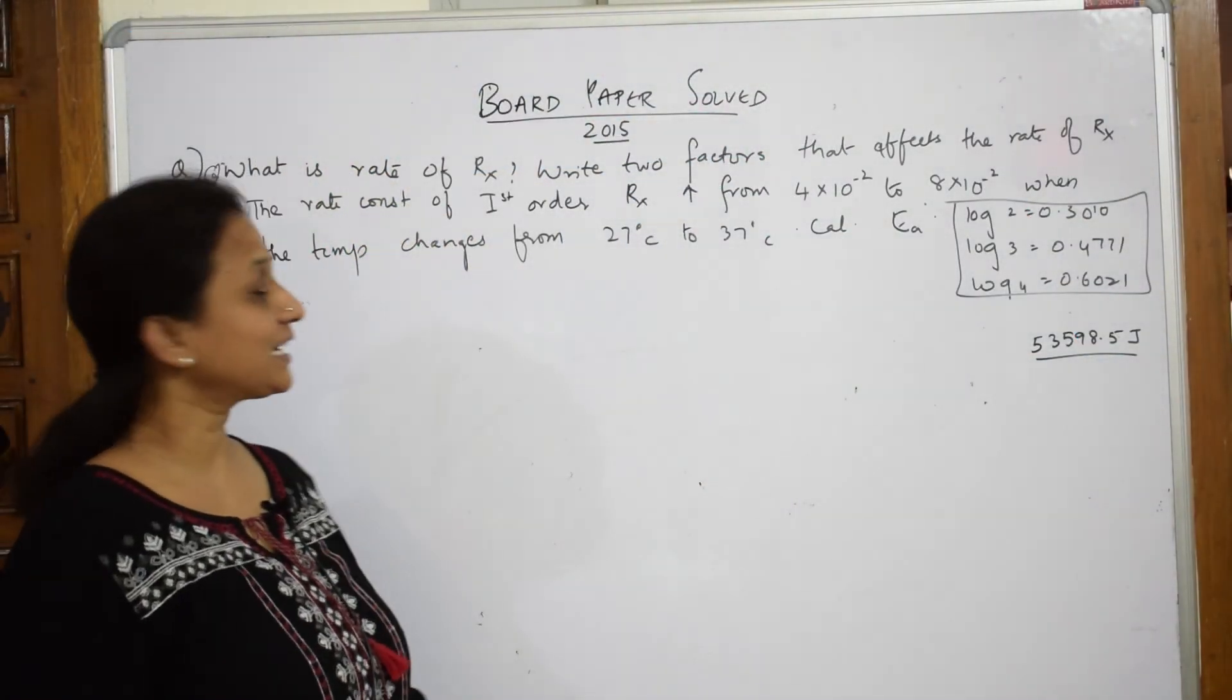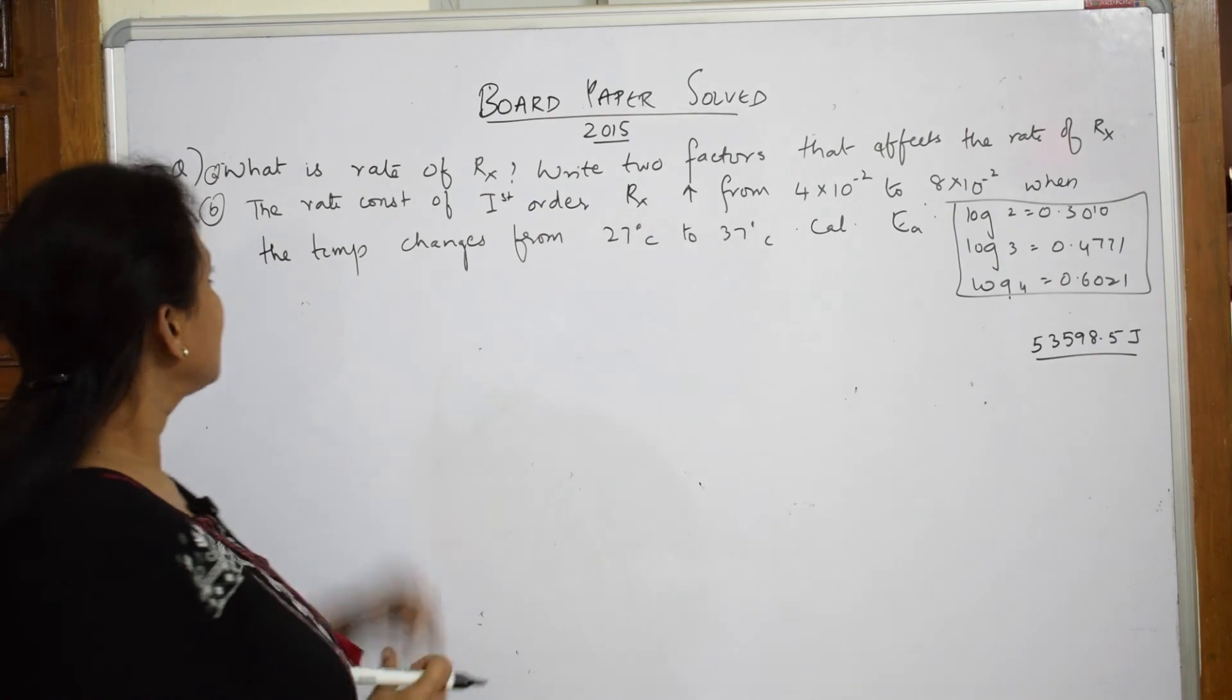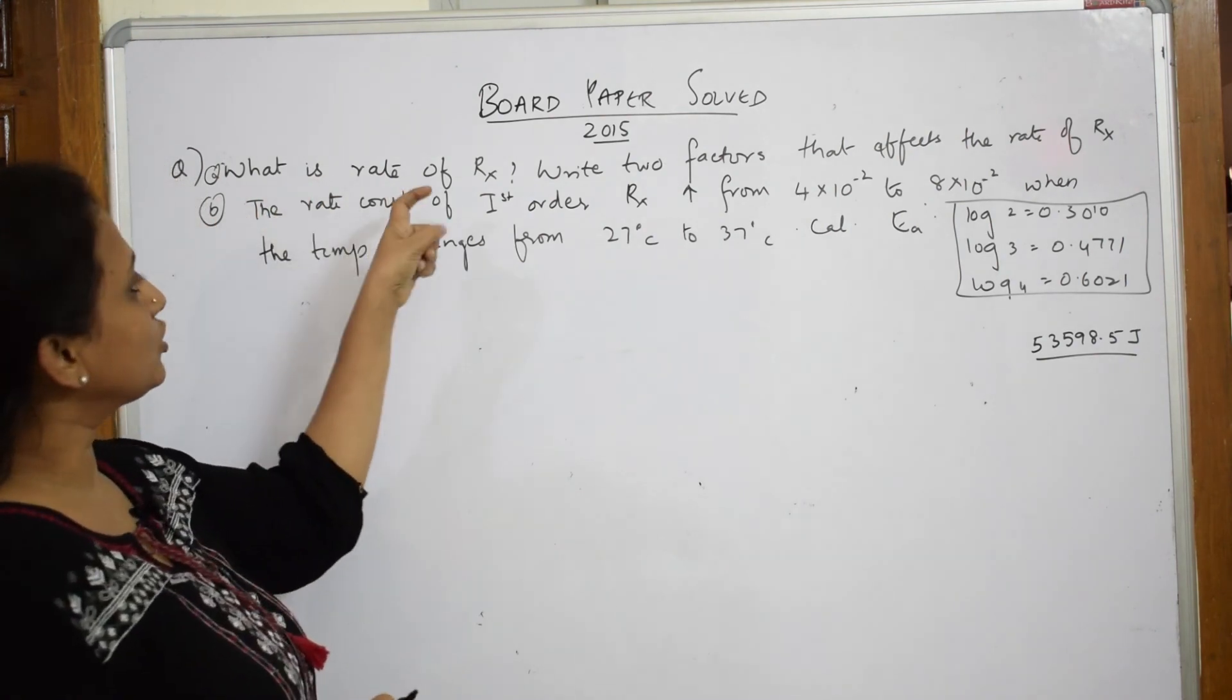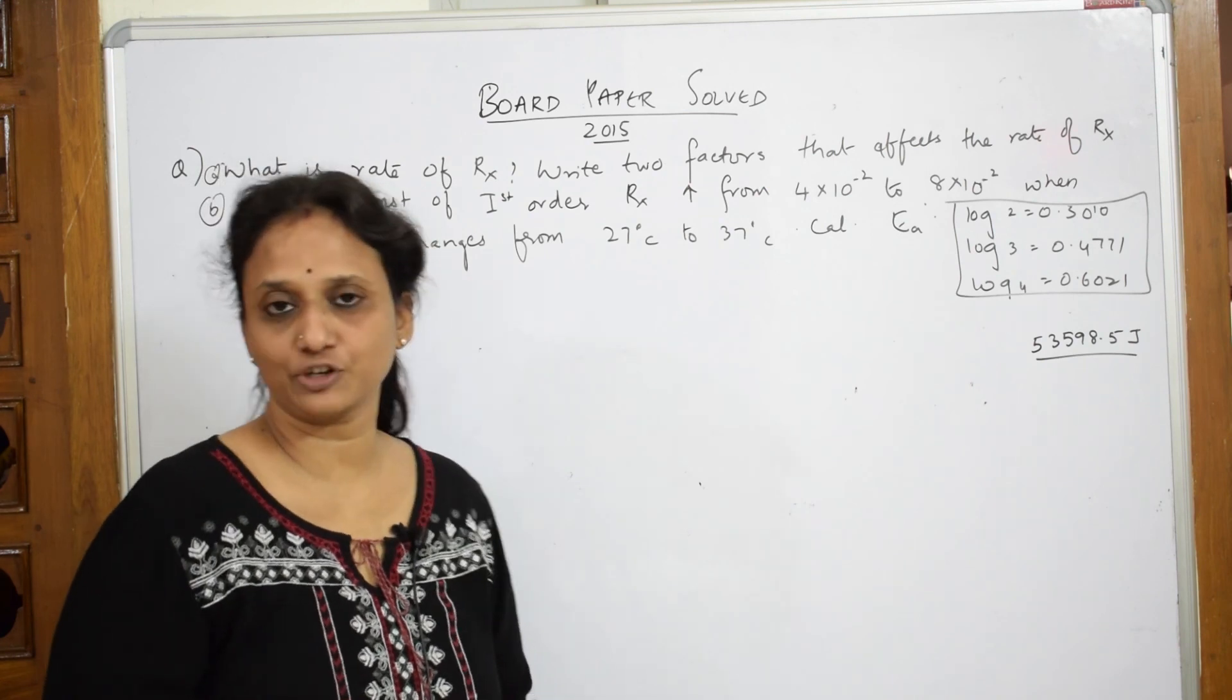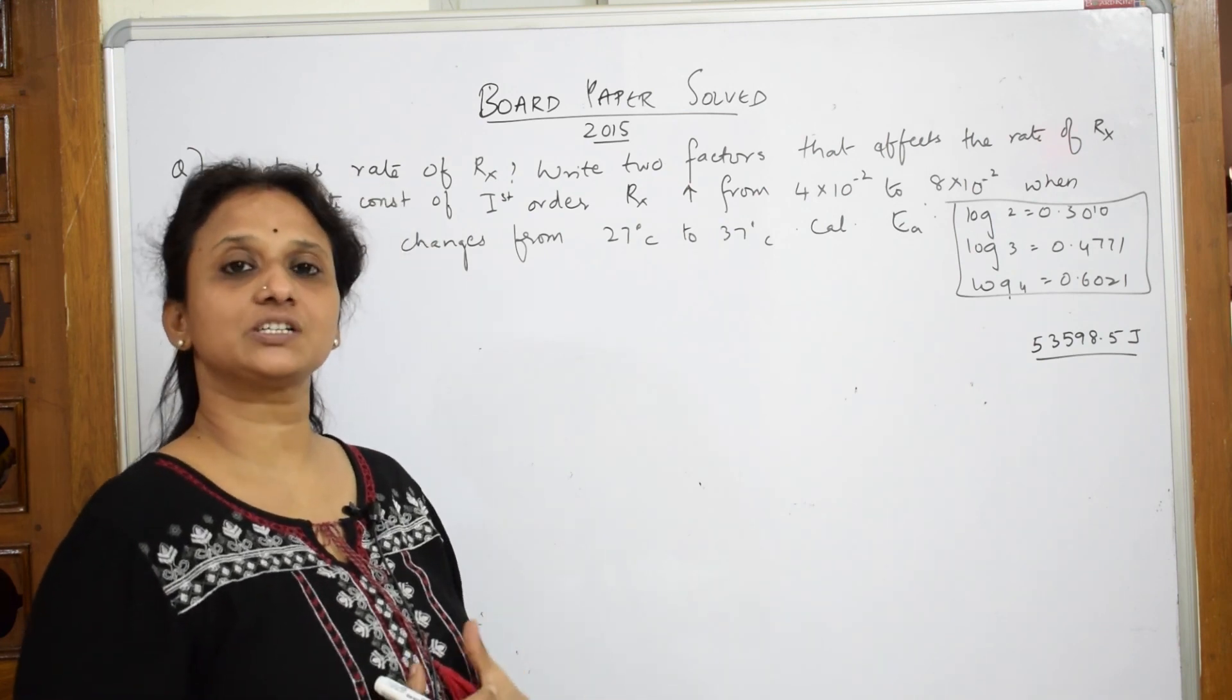So, let us come back and solve the 2015 paper. What is given to us? What is the rate of a reaction? Write two factors that affect the rate of the reaction. We have already done a video on this.